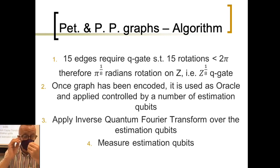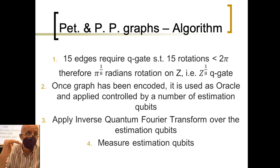In order to be encoded, we have to start. How many qubits are we needing? 15 and what is the amplitude of the quantum gates we need? 15 edges require a quantum gate such that 15 rotations will be below twice pi. Which means the appropriate qubit gate will be something representing pi over one eighth of radians rotation on Z. Once these have been encoded, it is used the oracle that also requires some ancilla qubits to compute that. And then apply the inverse quantum Fourier transform over the estimation qubits. Finally, we have to measure the estimation qubits.